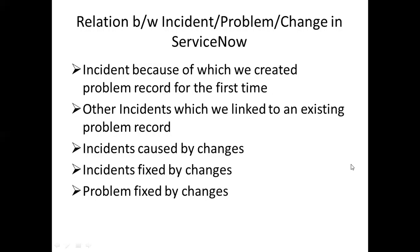Now, talking from a system perspective — how does it look in ServiceNow? Where do you attach these records? How do you differentiate the incident because of which you created the problem record for the first time versus other incidents linked to that problem record? There is a fundamental difference. One is where you came to know about the problem via an incident and raised a problem from that incident. Second, other incidents of similar nature are linked to that problem. The same applies to incidents caused by or fixed by changes.